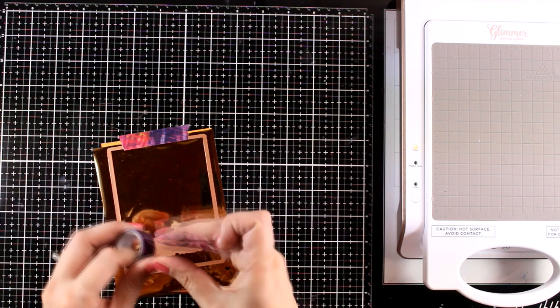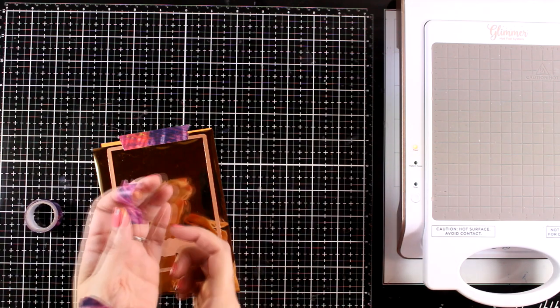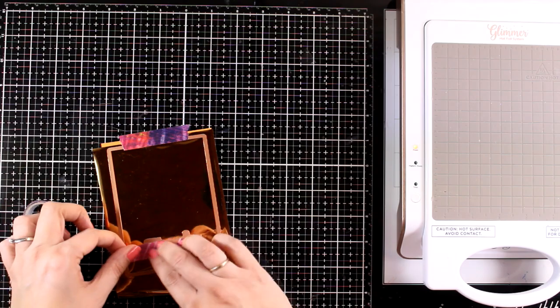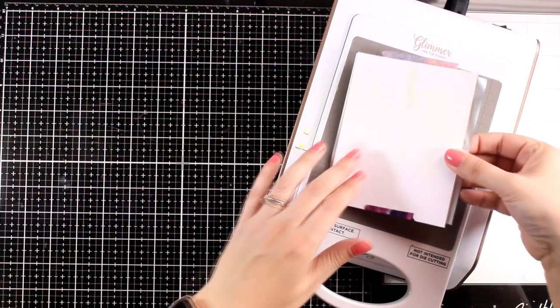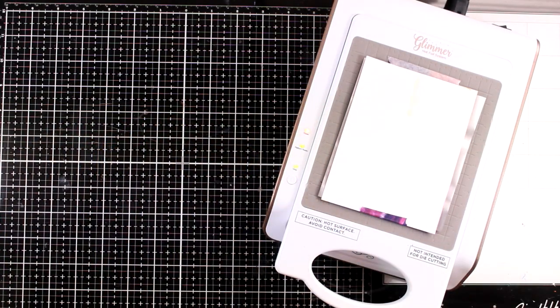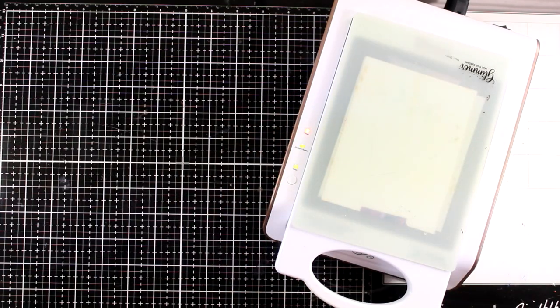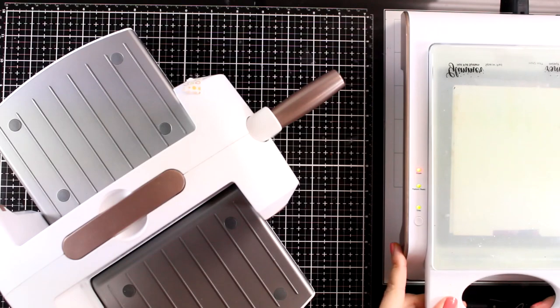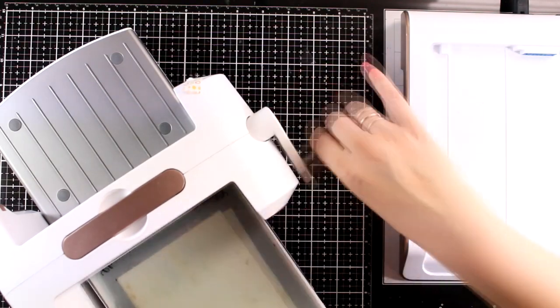I'm just going to eyeball that and then secure everything down with some washi tape. I have my machine warming up. I'm going to place that on top of the platform, press the button, and wait for that green light to stop blinking as I am preparing the sandwich. Then I'm going to run it through my die cutting machine.